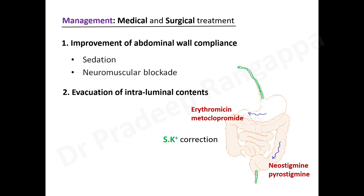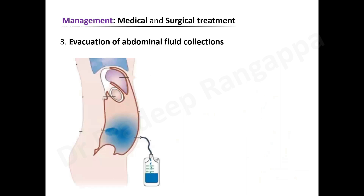Potassium and magnesium correction must happen concurrently. An important message is to keep potassium ahead — if potassium is 3.5, don't just aim for 3.8; aim for more than 4.5. Lagging behind on potassium replacement can perpetuate a vicious cycle of ileus that keeps worsening, whereas staying ahead prevents this.